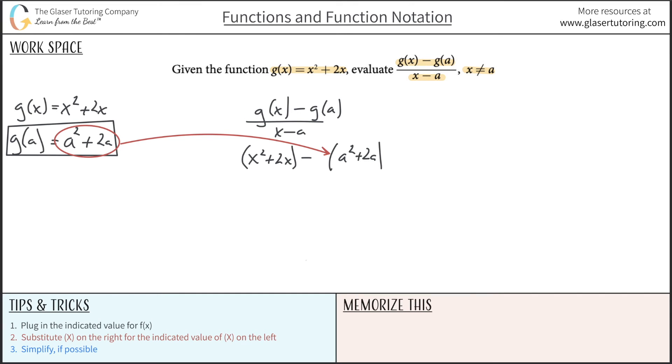The reason why I use parentheses is because we're subtracting the entire function value of g of a. So I have to make sure that I subtract the entire value. And I can do that by placing in parentheses because the negative is then distributed over the entire parentheses value. When in doubt, use parentheses. And this is all over x minus a.